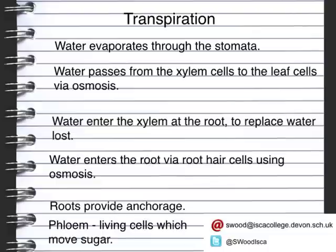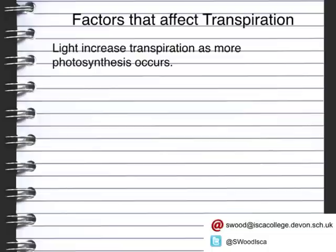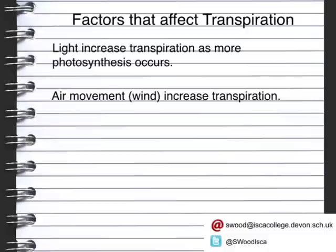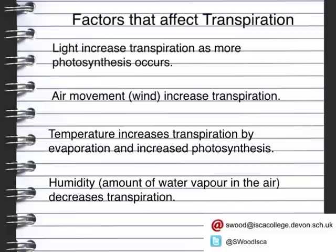The last part of the transpiration system involves the translocation of sugar, carried out by the phloem, which is made from living cells. There are four main factors that affect the rate of transpiration. Light increases transpiration because more photosynthesis occurs. Air movement or wind increases transpiration as it can physically remove water from the leaf. Temperature increases transpiration by increasing evaporation and the rate of photosynthesis, changing the concentration gradient. Humidity — the amount of water in the air — decreases transpiration, as there is a lower concentration gradient between the outside and inside of the leaf.